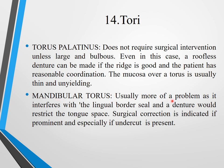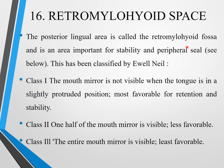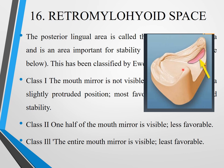Mandibular torus is less common but more problematic as it interferes with the lingual bar; surgical correction is indicated if very prominent or with large undercuts. The retromyloid fossa — the posterior lingual area — is important for stability and peripheral seal. Neal's classification: Class I — mouth mirror not visible when tongue is slightly protruded (most favorable); Class II — half the mirror visible (less favorable); Class III — entire mirror visible (least favorable).